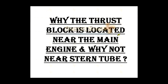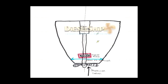Now the question is: why is the thrust block located near the main engine and not near the stern tube? This is most frequently asked in oral examinations. If the thrust block is placed near the stern tube, there is very little area for the propeller thrust to act on, and since the area is very small, additional stiffening members are required to withstand such a huge thrust. Furthermore, the number of nodal points available near the stern tube is comparatively very few.